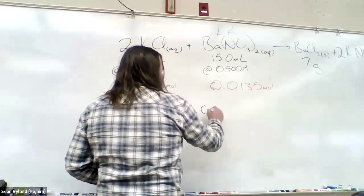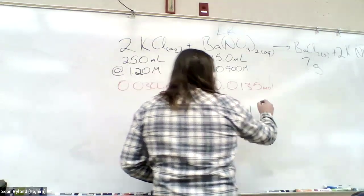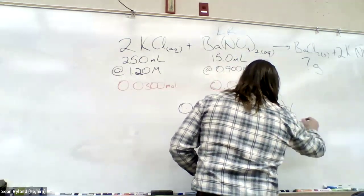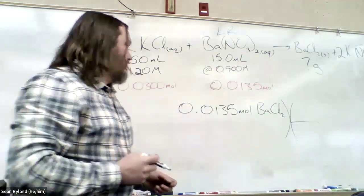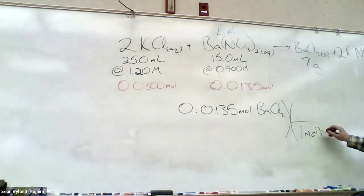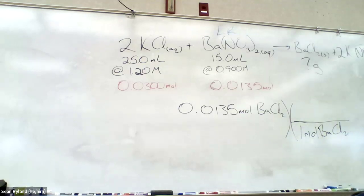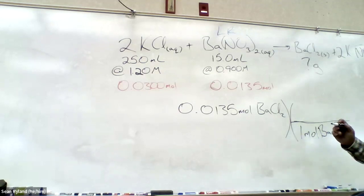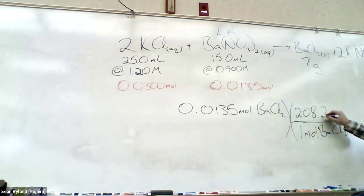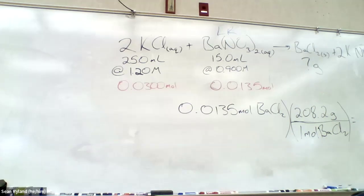Our theoretical yield was 0.0135 moles. What is that in grams of barium chloride? Pull out your periodic table and let's do the molecular weight. Barium is around 137, so we'll get something pretty close to 3 grams for a theoretical yield in grams — approximately 2.81 grams.